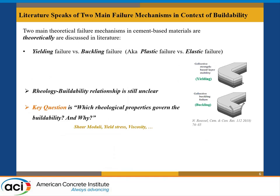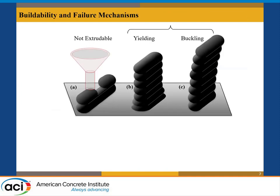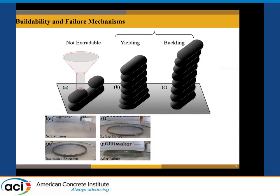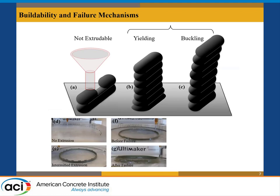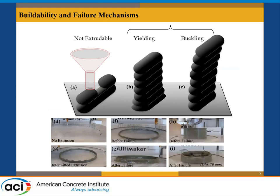The question we ask is: what rheological properties govern buildability and these mechanisms? Essentially, you have three situations: you either cannot extrude; or you can extrude but your material fails at the lower layers preventing you from building up; or as you build up, buckling occurs in which the material collapses on itself — one of which is depicted in this video.